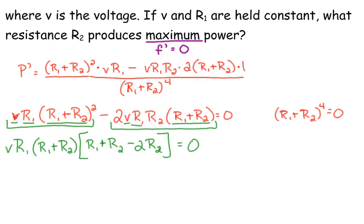So for this to be equal to 0, we've got several possibilities here. We have 3 things times each other. So V times R sub 1 is equal to 0, R sub 1 plus R sub 2 is equal to 0, and then we also have R sub 1 minus R sub 2 is equal to 0.